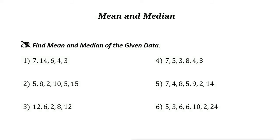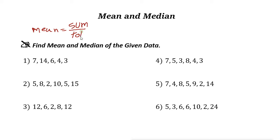To find the mean or average of a set of numbers, you can use this formula. The mean or average is a fraction where the top number is the sum of all the numbers you have, divided by the total number of values. So that is the sum over the total number of numbers.